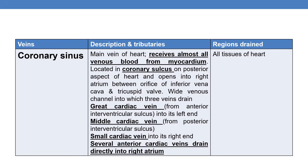Coronary sinus is the main vein of the heart. It receives almost all venous blood from the myocardium. It is located in the coronary sulcus on the posterior aspect of the heart, and opens into the right atrium between the orifice of the inferior vena cava and the tricuspid valve.